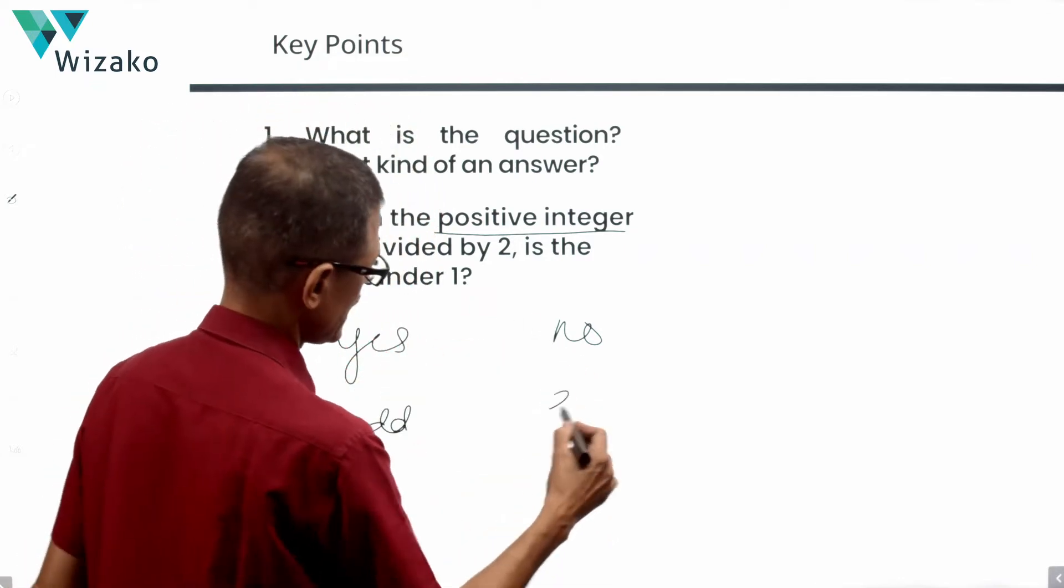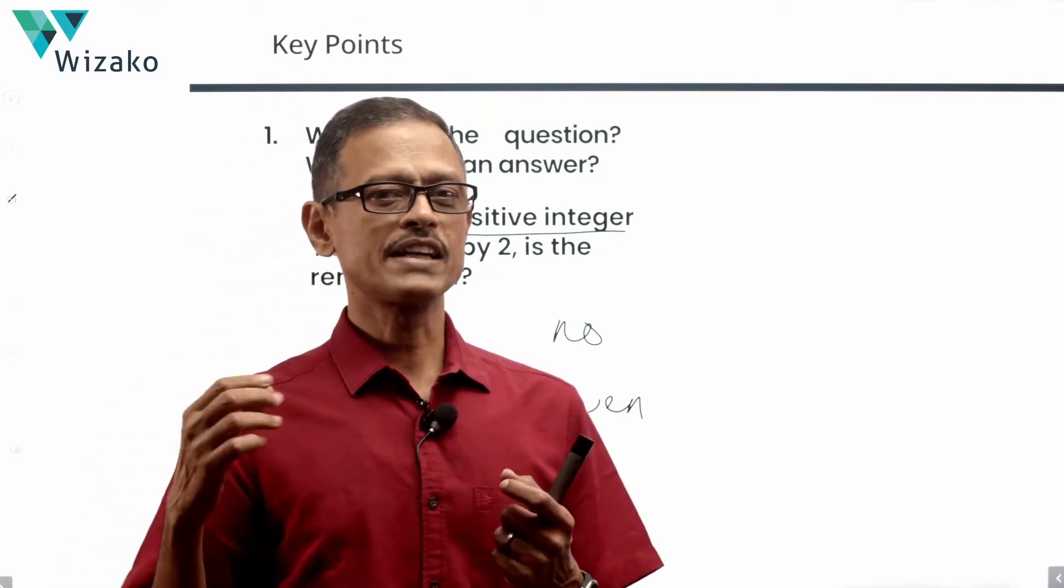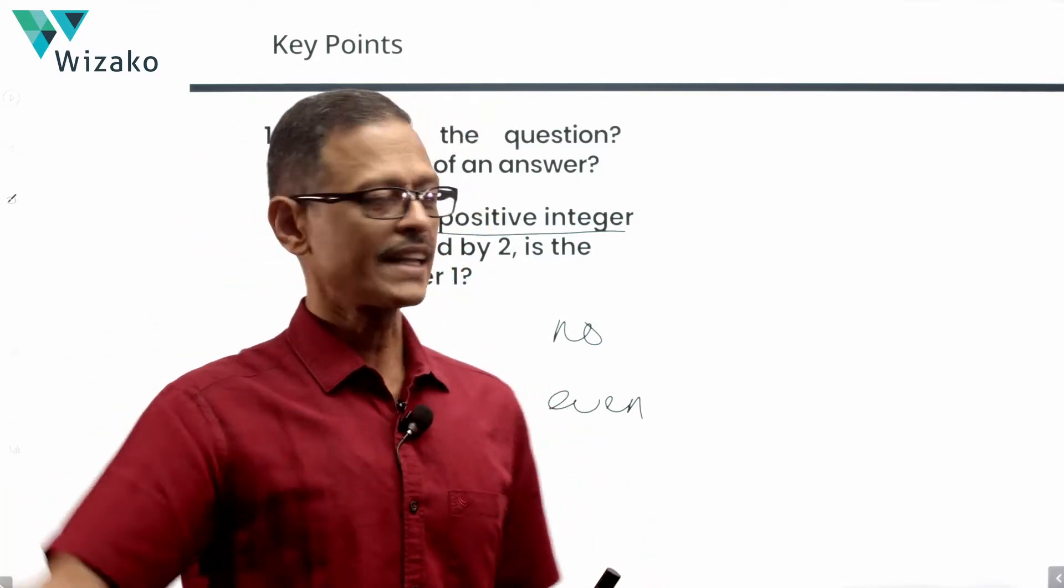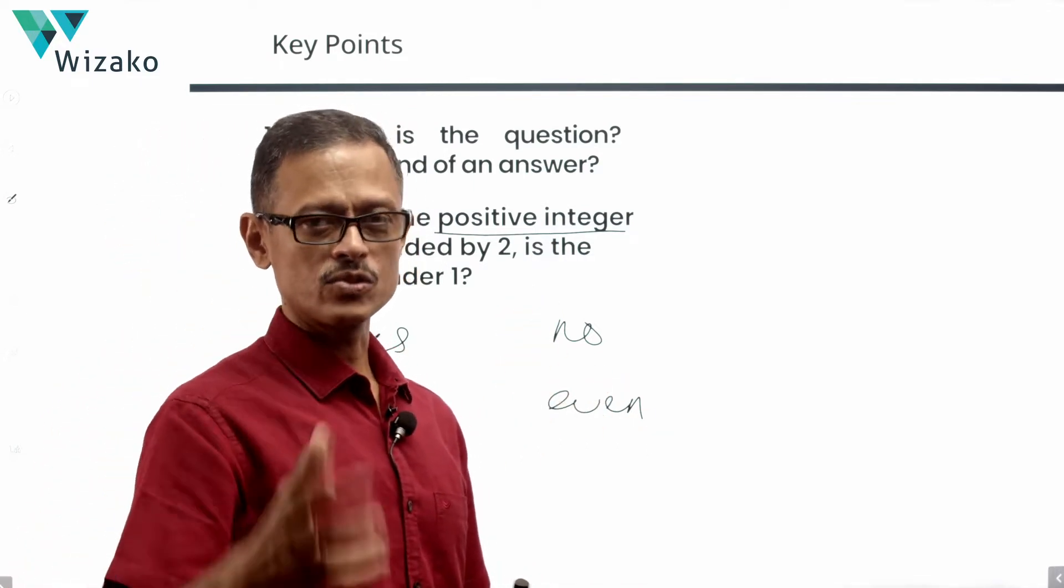If the number ended up being an even number, the answer is going to be no, because even numbers are divisible by 2. In that case, the remainder is going to be equal to 0. 2, 4, 6, 8, 10, divide them by 2, you're going to get a remainder which is 0. Then the remainder is not 1. Therefore, the answer is no.